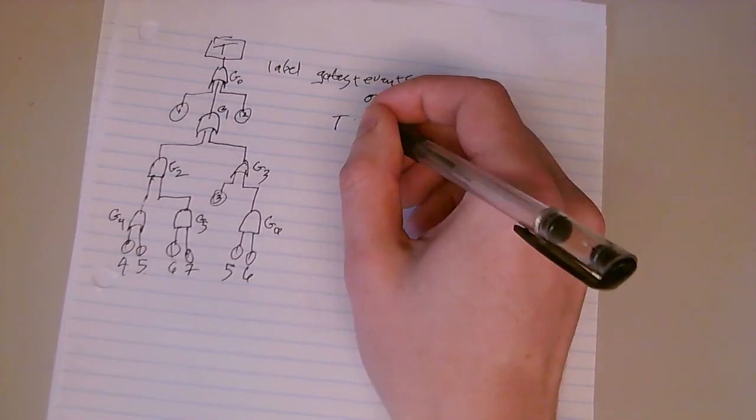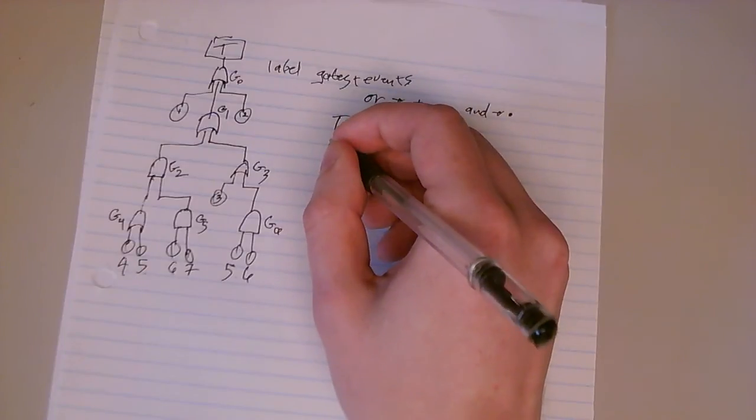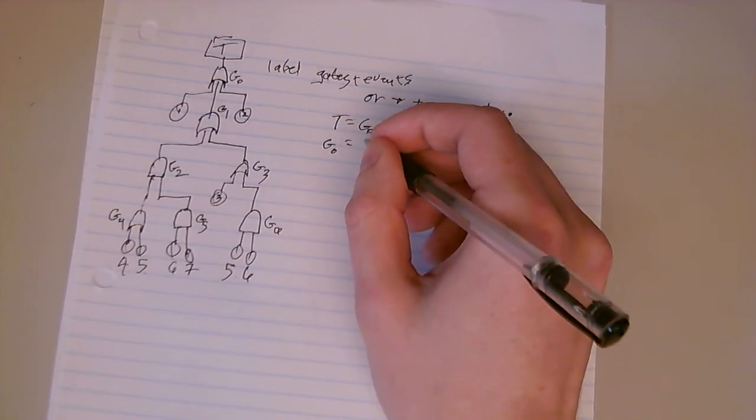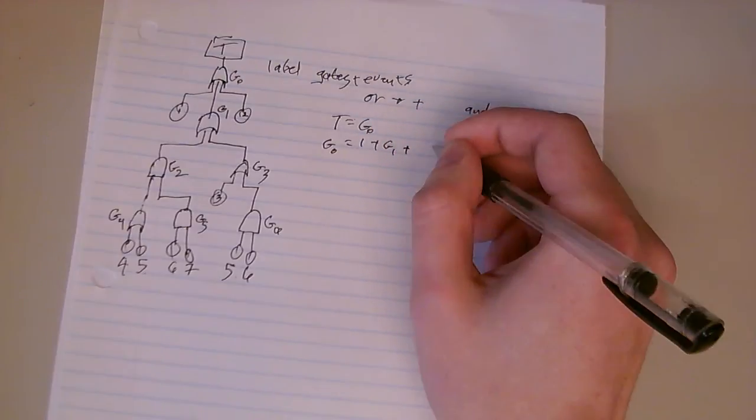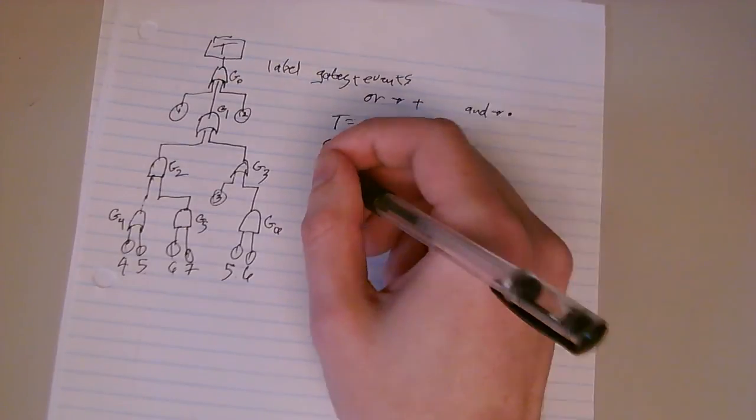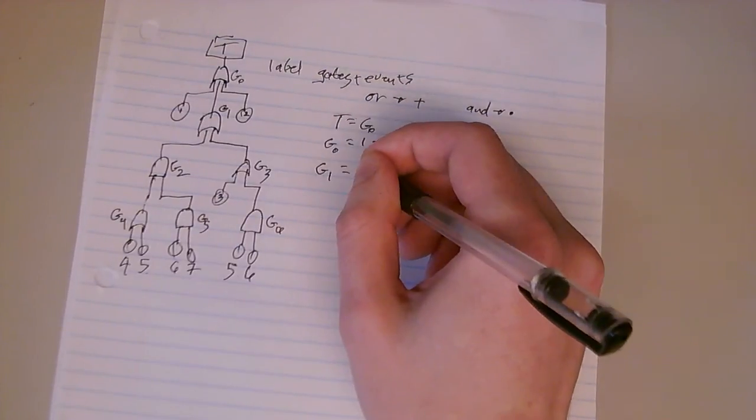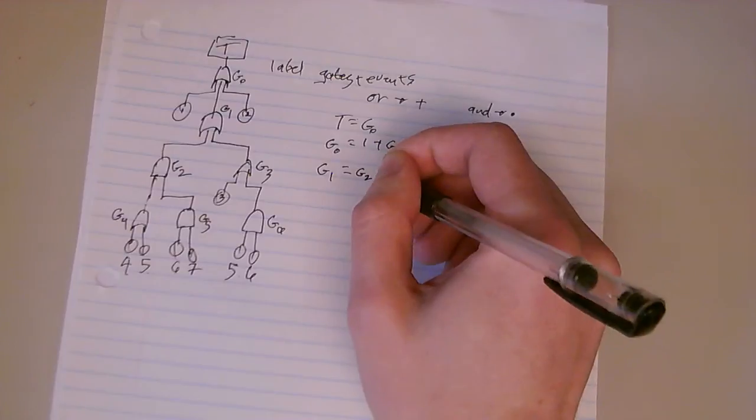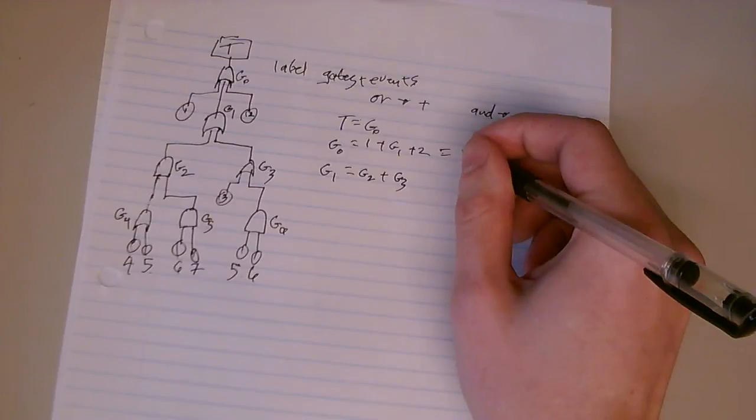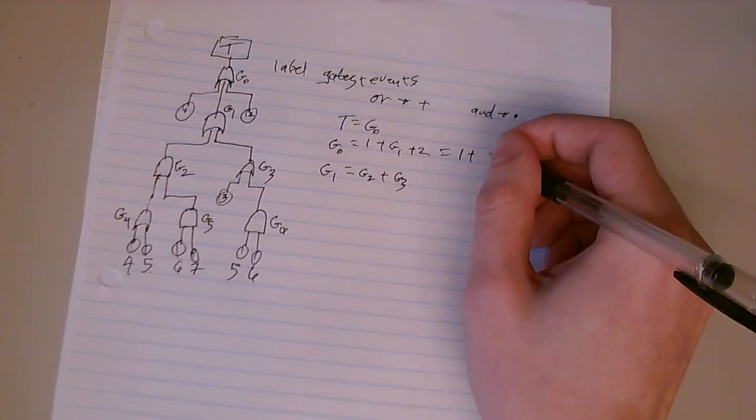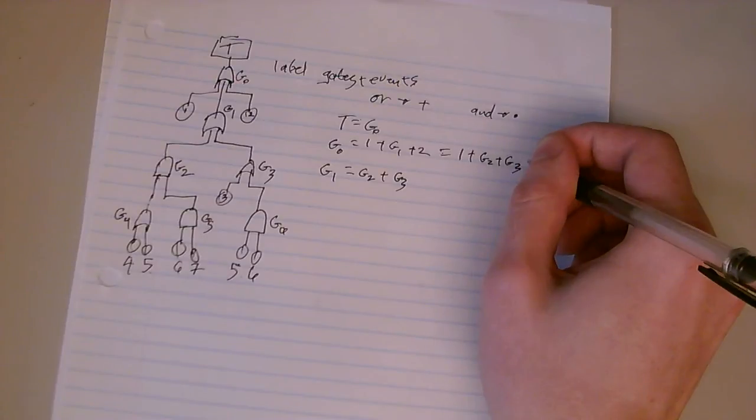So we're going to say T equals G0. We're going to say G0 equals 1 plus G1 plus 2. G1 equals G2 plus G3. We're going to go ahead and substitute that in. 1 plus G2 plus G3 plus 2.